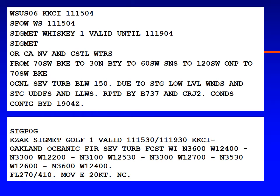Here are the in-flight advisories that were put out for this area. They had SIGMET Whiskey 1 for the San Francisco region, which came out at 1504Z and was valid until 1904Z for Oregon, California, Nevada, and the coastal waters. It says occasional severe turbulence below 15,000 feet due to strong low-level winds and strong updrafts and downdrafts, and low-level wind shear reported by 737s and CRJs. This was expected to continue beyond 1904 Zulu.